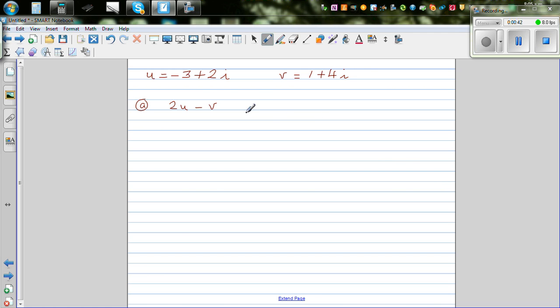This is manipulation of complex numbers. This would be 2 times u, which is minus 3 plus 2i, minus 1 plus 4i. Expanding this: 2 times minus 3 is minus 6 plus 4i, and opening this bracket is minus 1 minus 4i. Let us group the real part with the real parts: this is minus 6 minus 1 plus 4i minus 4i.